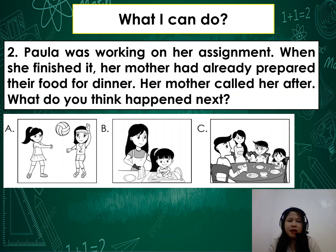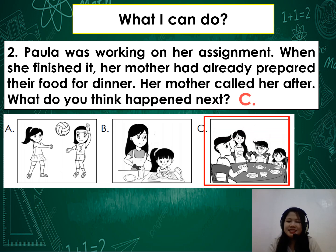Number 2: Paula was working on her assignment. When she finished it, her mother had already prepared their food for dinner. Her mother called her after. What do you think happened next — A, B, or C? Write your answer in your notebook. The correct answer is letter C.